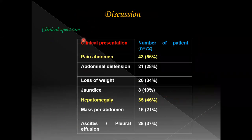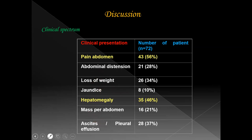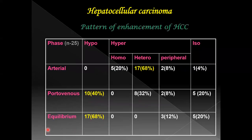Regarding the clinical spectrum, the most common clinical presentation was plain abdomen pain, seen in 43 patients. The second most common was hepatomegaly, seen in 35 patients. The remaining clinical features included abdominal distension, loss of weight, jaundice, mass per abdomen, and ascites or pleural effusions.